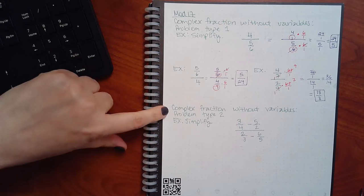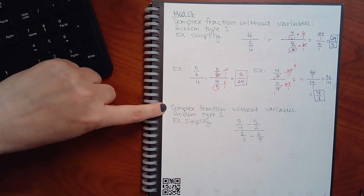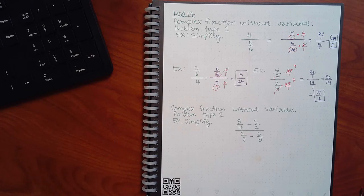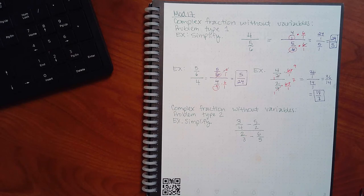Now here, this is problem type two — complex fractions without variables, but problem type two. The only difference is instead of just having one fraction in the numerator, now you have a sum or difference of two fractions in the numerator or in the denominator. This one actually has both — a difference in the top and a difference in the bottom. So there are four fractions visually going on. All that means is when you do the LCD over one step, you're going to have to do it four different times for every single fraction. Every single term has to be multiplied by the LCD. If you skip somebody, you're not really multiplying by that clever little one anymore — you've changed the value of that fraction.